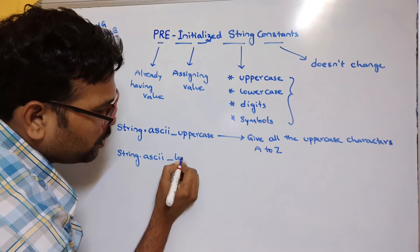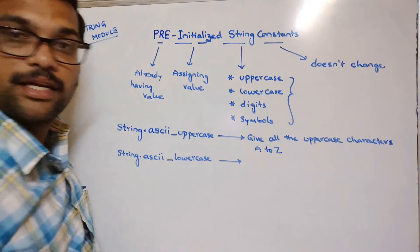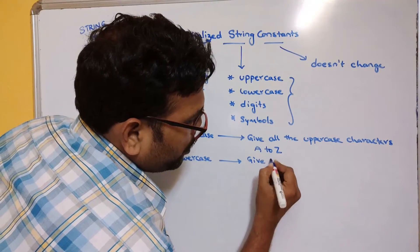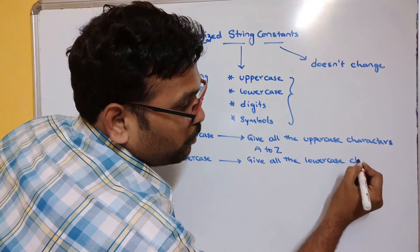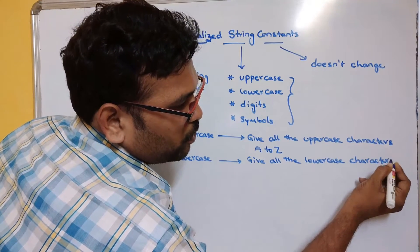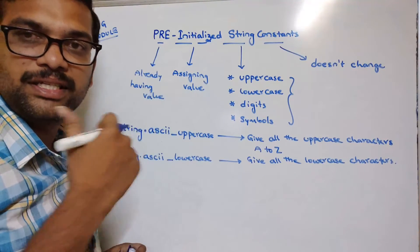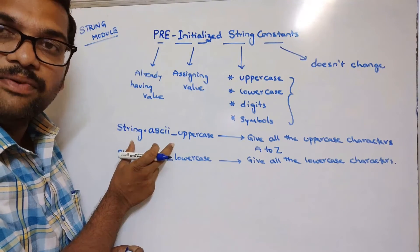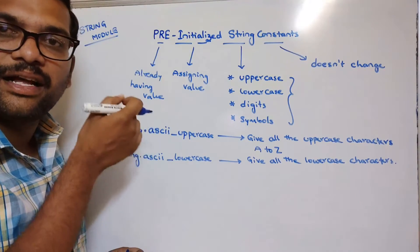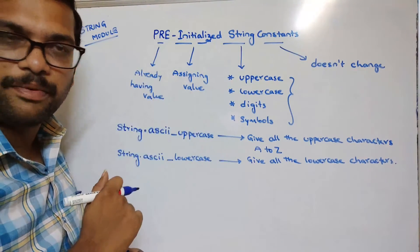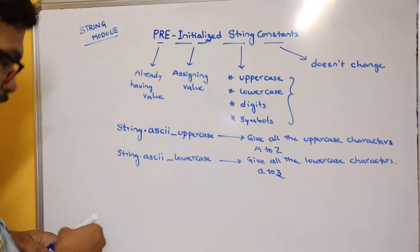Similarly, there is one more constant: string.ascii_lowercase. This will give all the lowercase characters. I will demonstrate all these things in the interpreter, where we'll execute these operations and see the results. This is nothing but small a to small z.